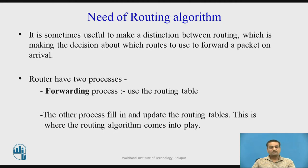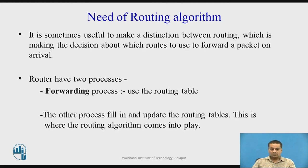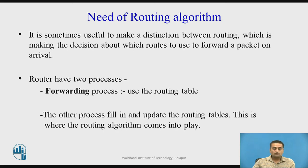It is useful to distinguish between routing — making the decision about which route to use — and forwarding a packet on arrival. A router has two internal processes: the forwarding process, which uses a routing table, and the routing process, which creates, fills in, and updates that routing table using routing algorithms. Forwarding decisions are based solely on the routing table, making its maintenance the most important process inside a router.